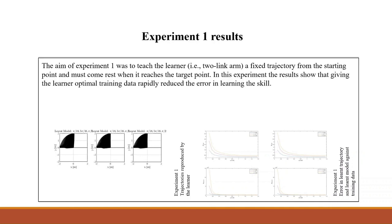In this experiment, the results show that giving the learner optimal training data rapidly reduced the error in learning the skill.